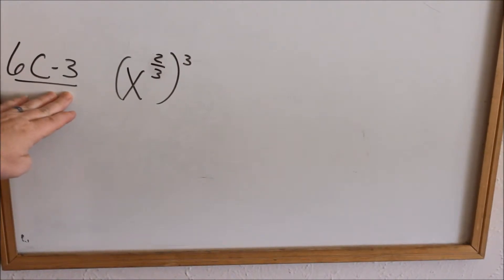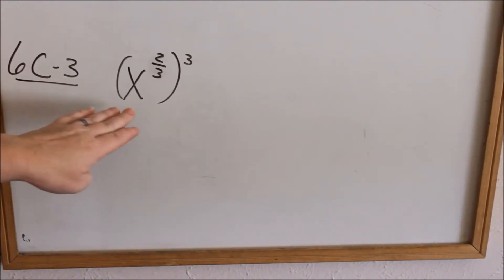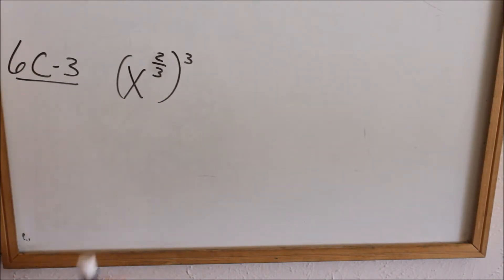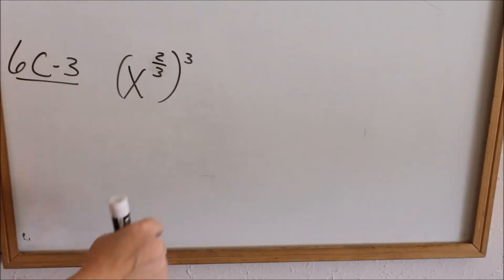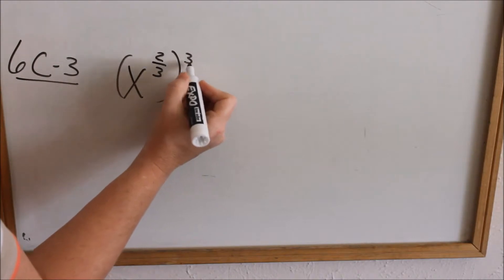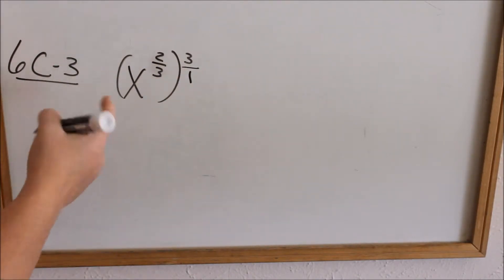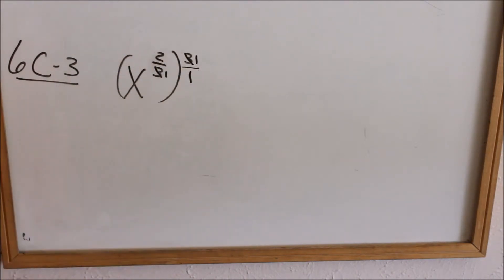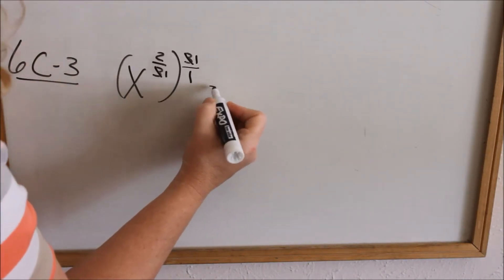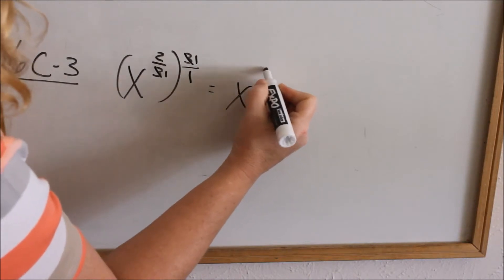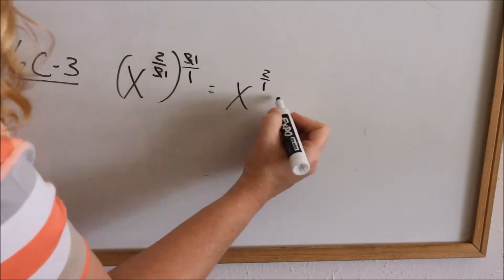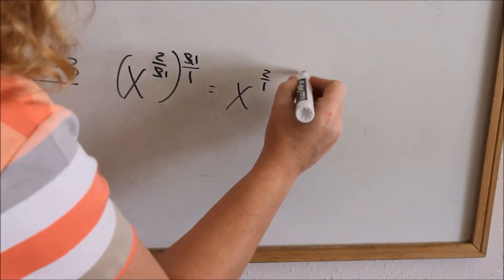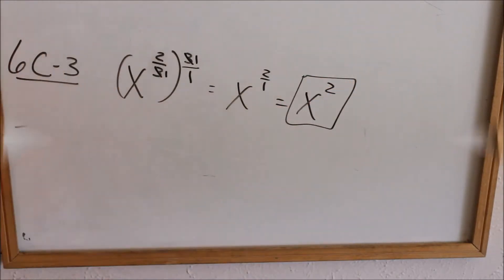All the ones we've done so far were numbers. Now let's see how we do this if we have letters and fractional exponents. When you have an exponent raised to an exponent, you multiply. You can turn any number into a fraction by putting it over 1. Do any of my numbers cancel? Yes, the 3's do. So multiplying your fractions, this just becomes x to the 2 over 1. And 2 over 1 is just x squared. Since we don't have a number, there's nothing else to simplify — that is simplified.